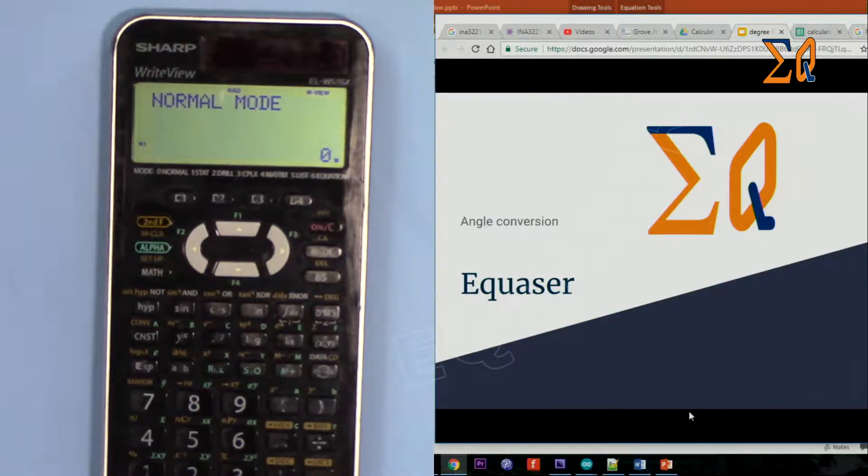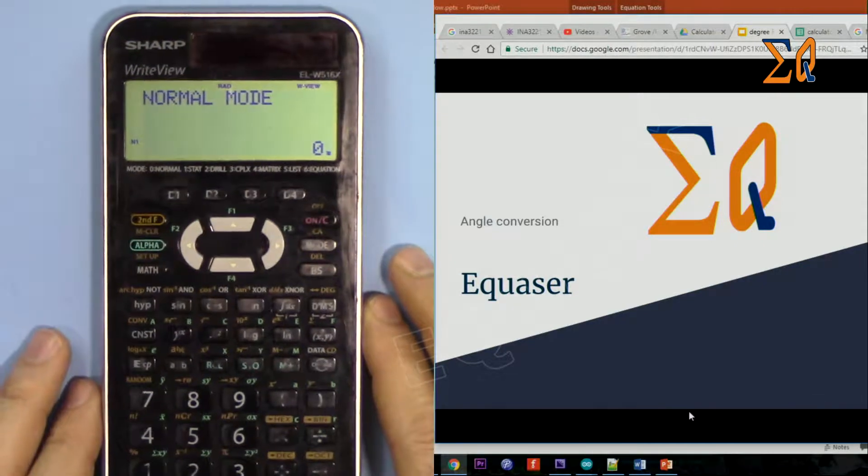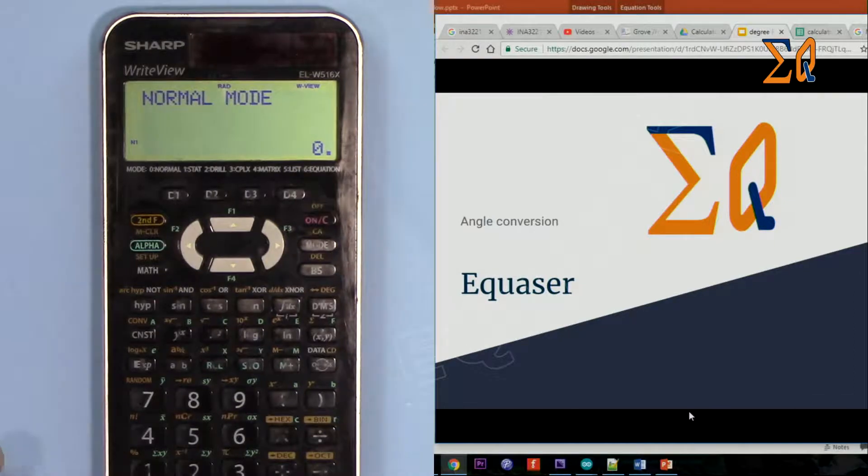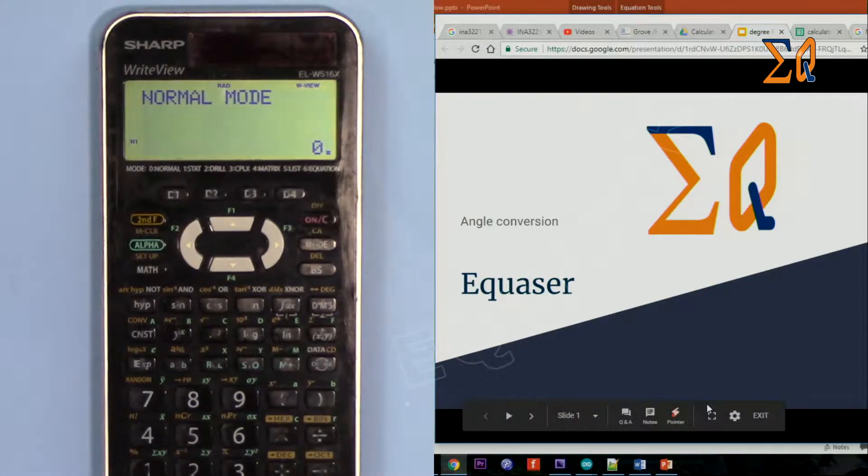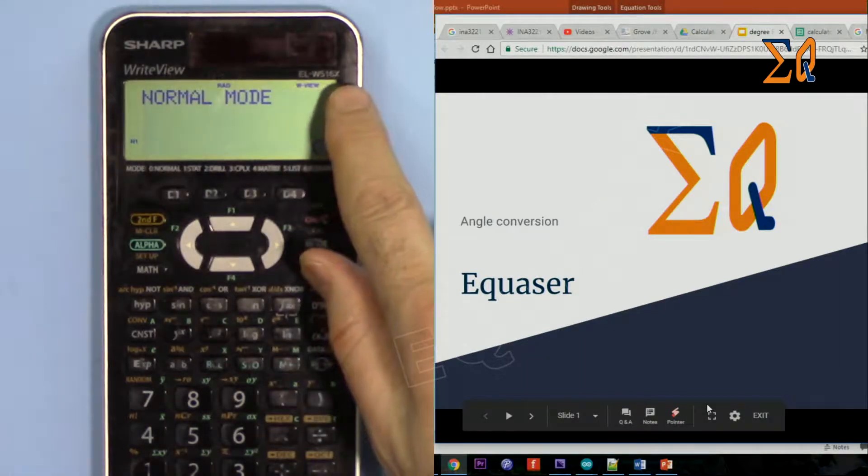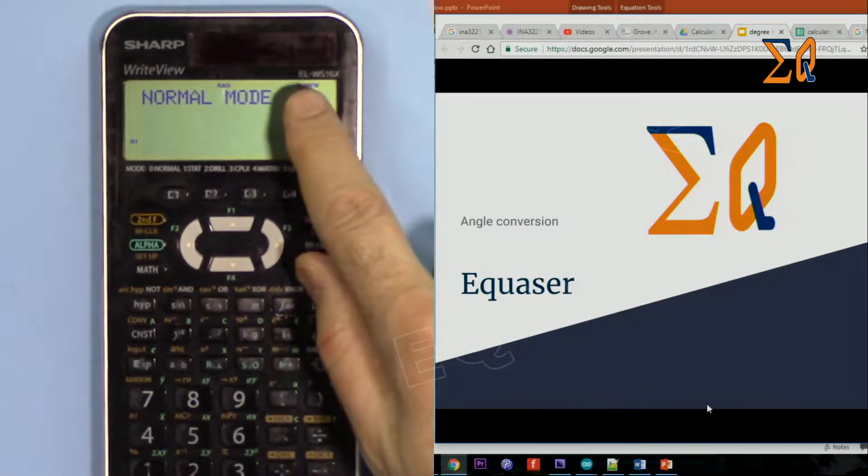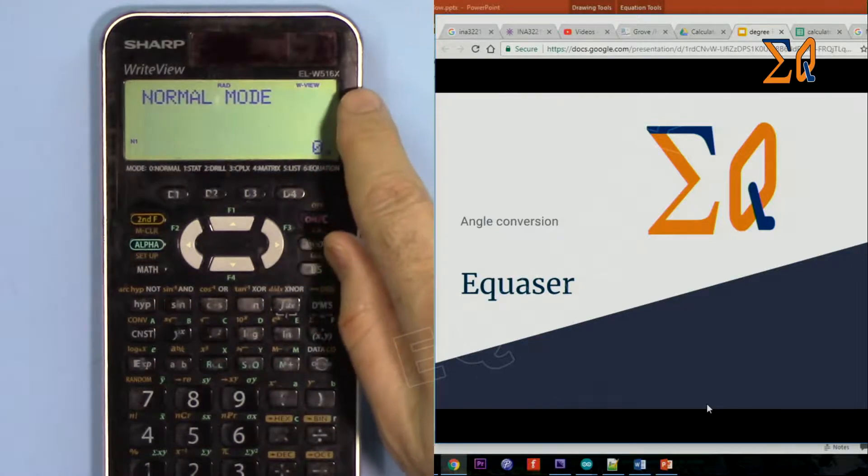Hi welcome to Equasor. In this video I'm going to show you how you can convert degree and radian and gradient one to the other, so angle conversion using this Sharp ELW516X and this applies to ELW516 without the X.